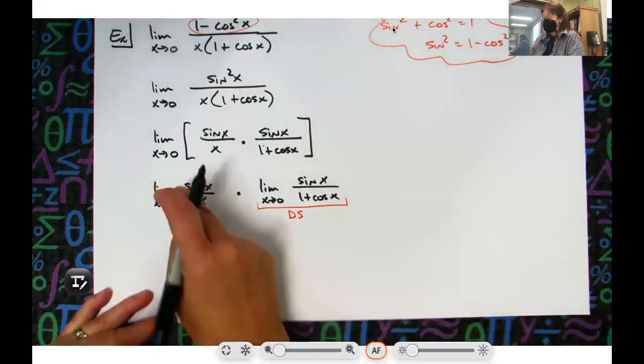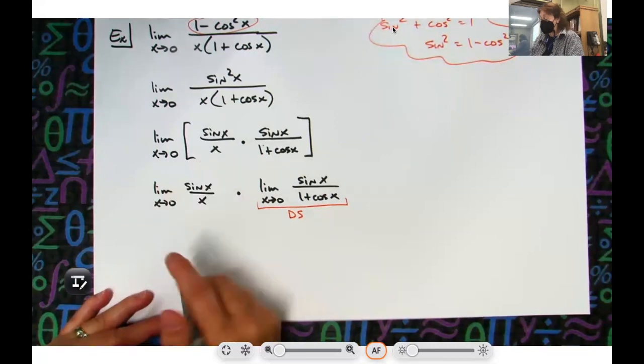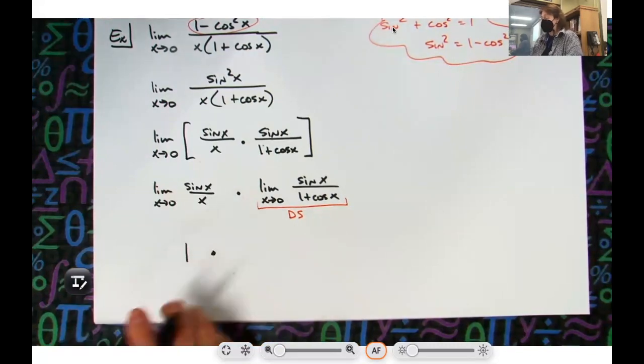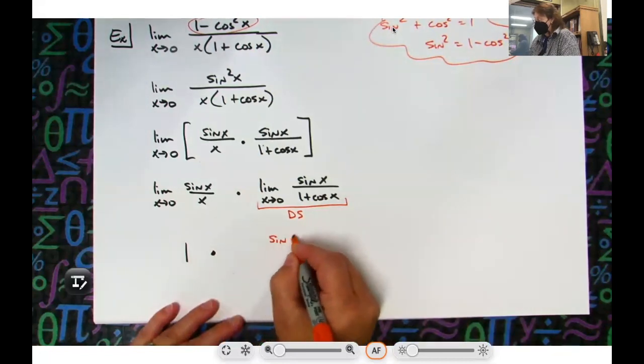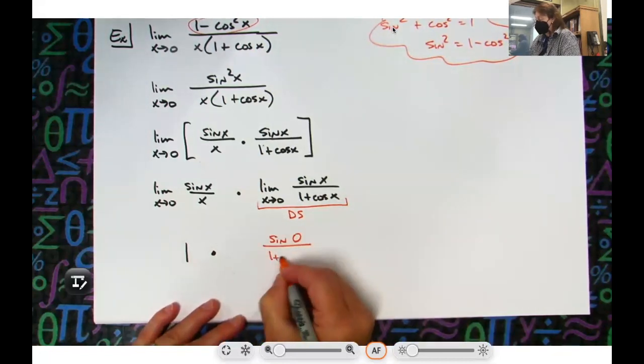All right, so over here, I'm going to take the limit here so I can do that. Over here, direct substitution, I'm taking the limit when I plug it in. So I'm going to have sine of 0 over 1 plus cosine 0.